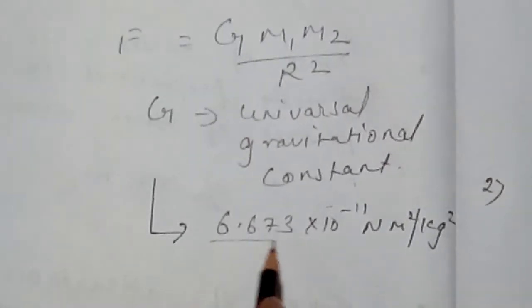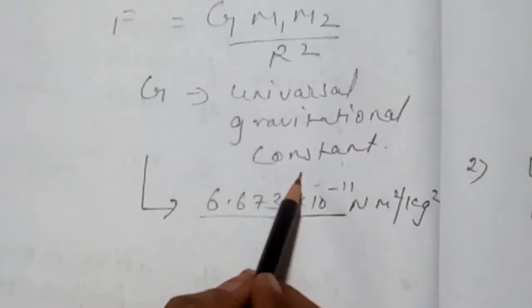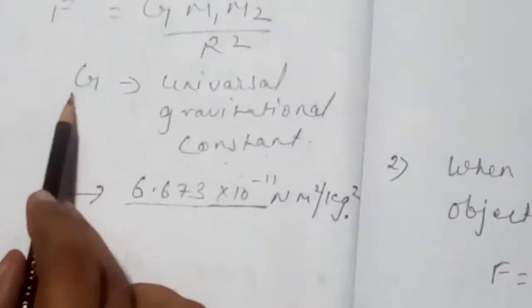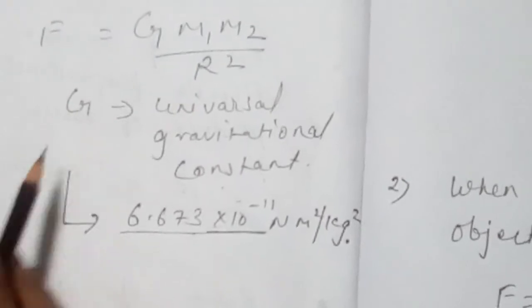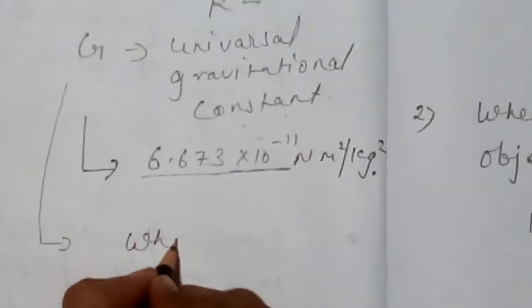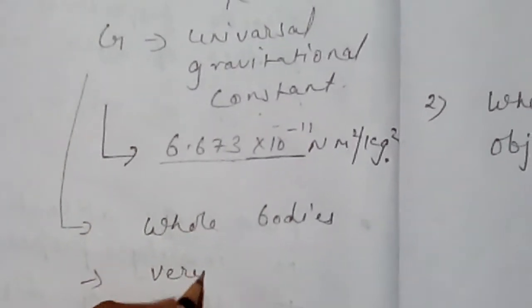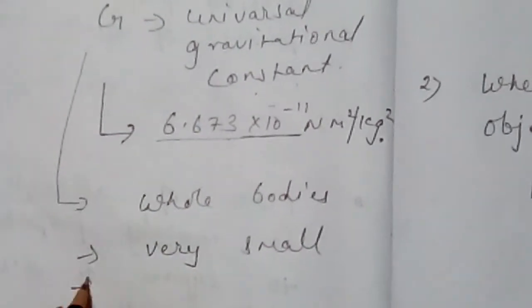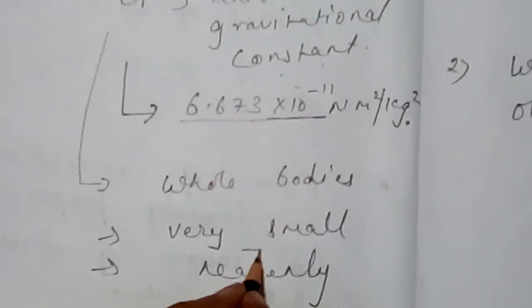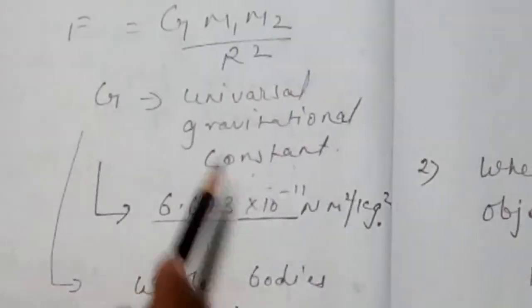The value of G will be always same. That's why it is known as universal gravitational constant. Now you see here why this is universal gravitational constant. One more point is there: it is applied to all bodies, whether it is very small or it is very large, very small or it is heavenly bodies. Everywhere it is applied. So here we are saying universal gravitational constant.